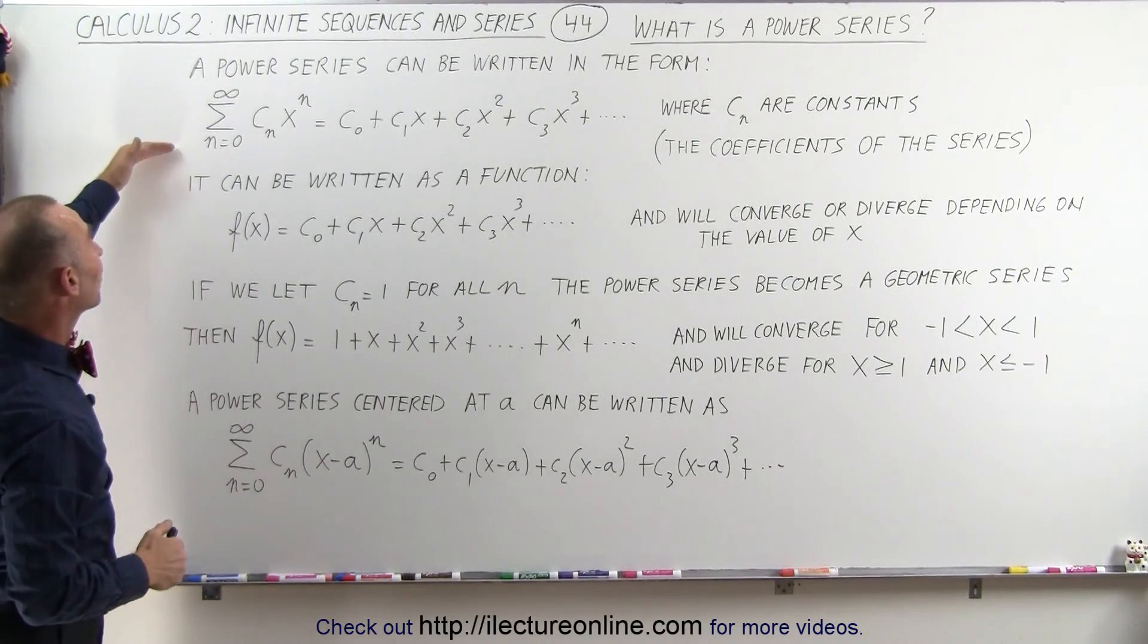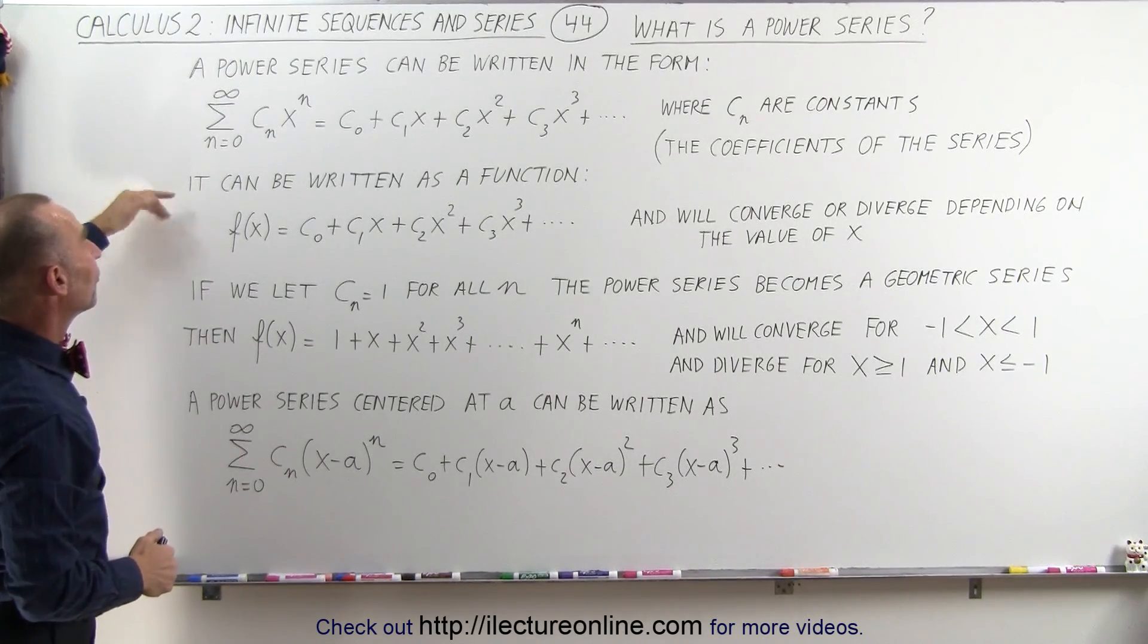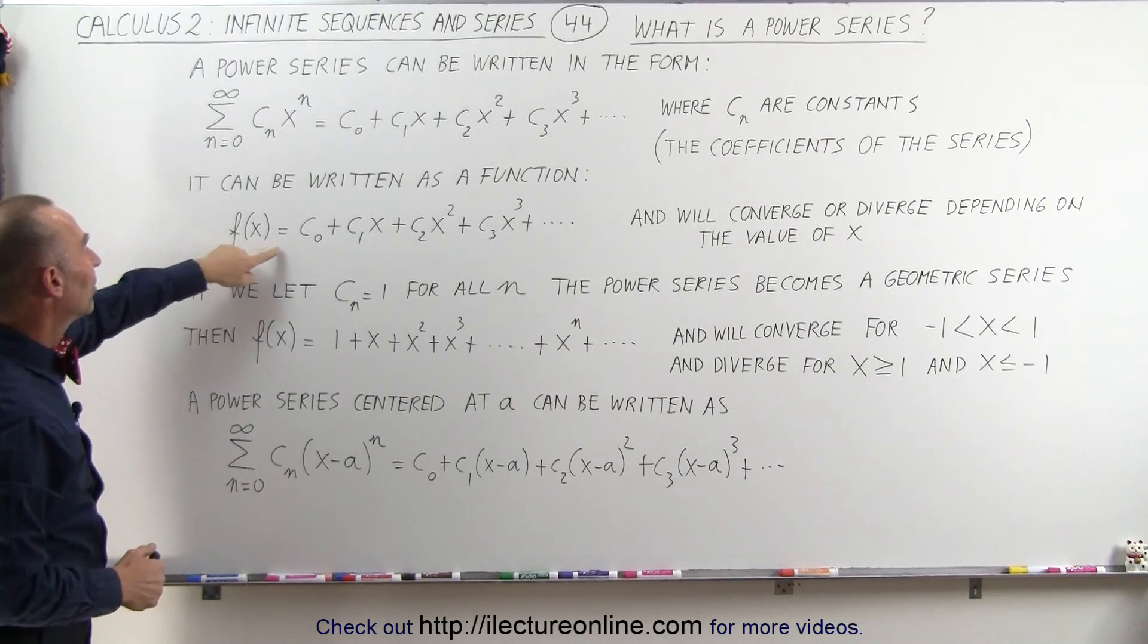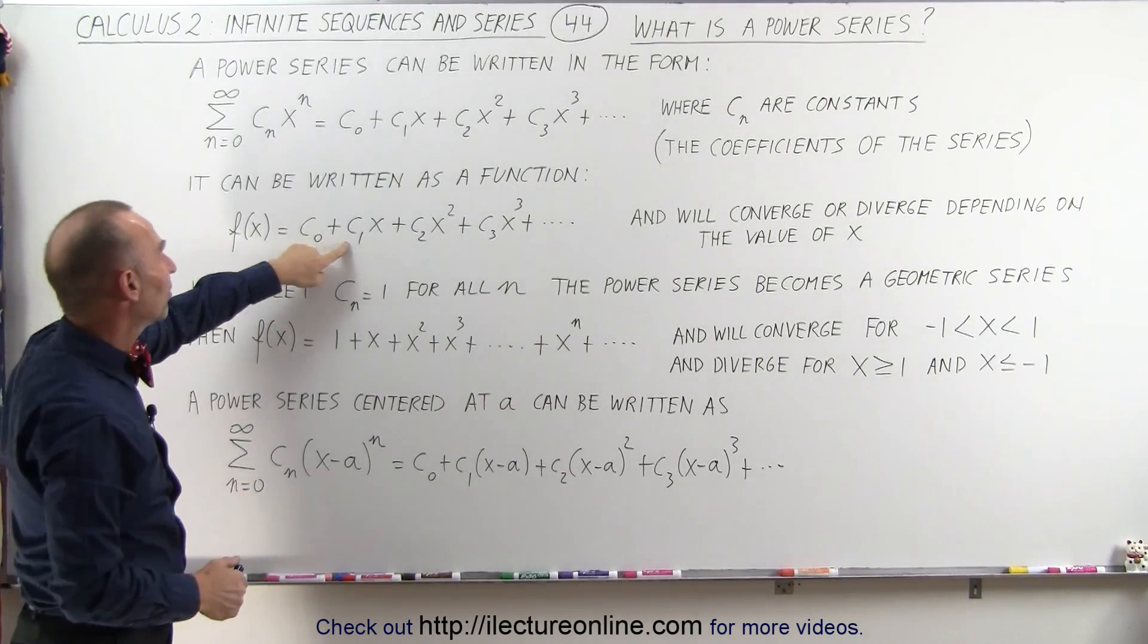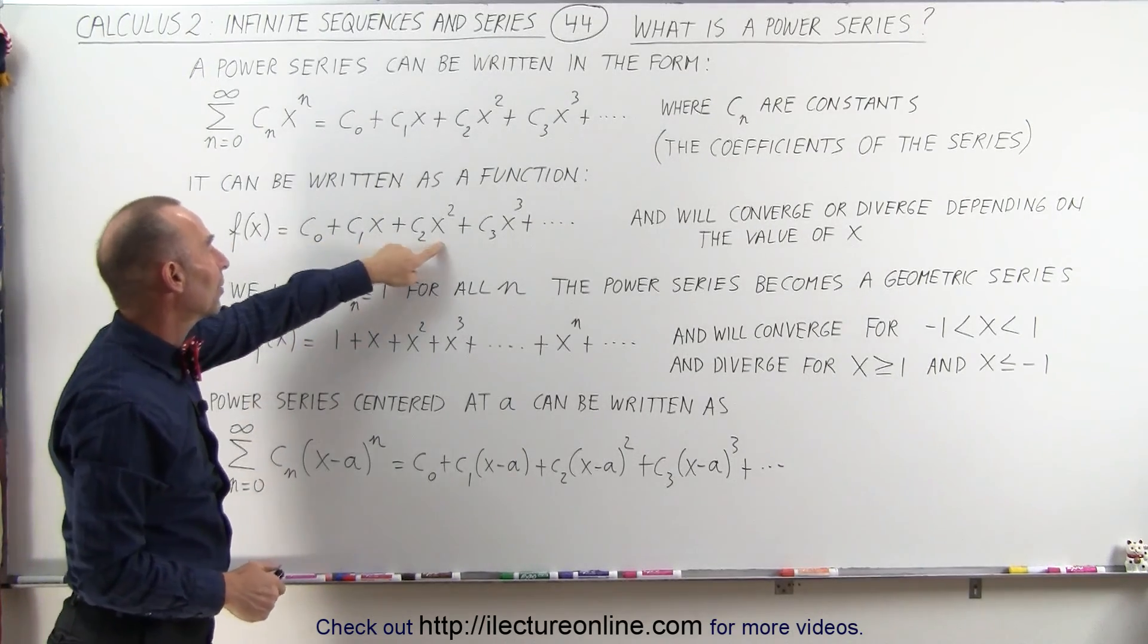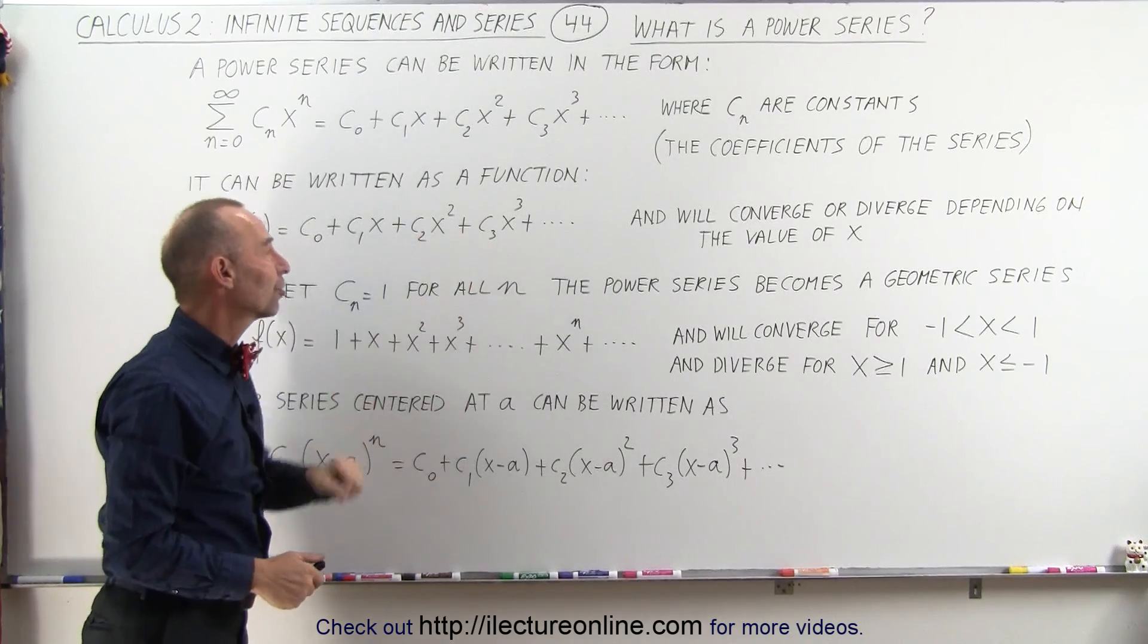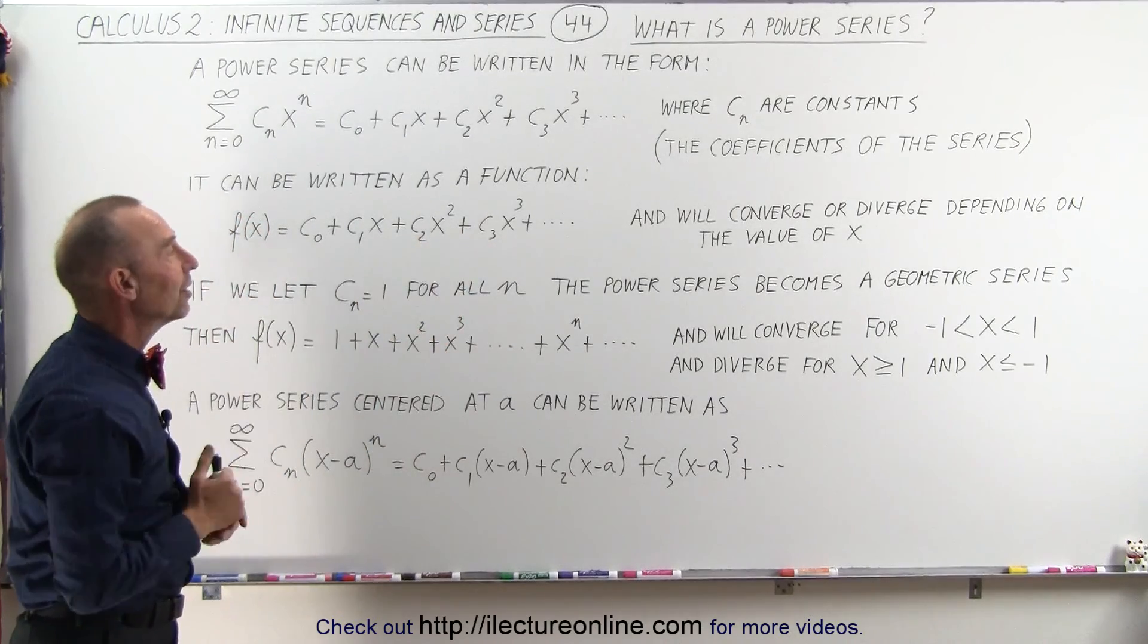Now, an infinite series like this can also be written as a function of x. f of x is equal to c sub 0 plus c sub 1 times x plus c sub 2 times x squared plus c sub 3 times x cubed and so forth, off to infinity, of course.